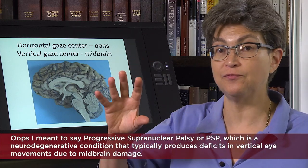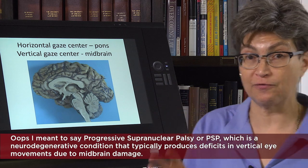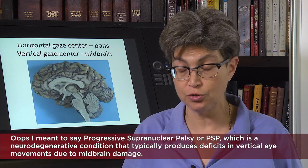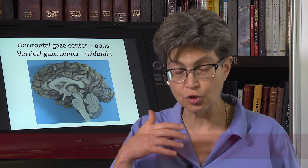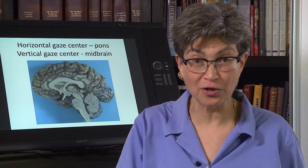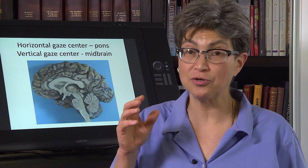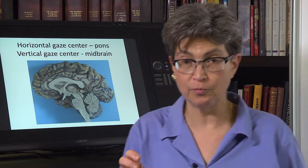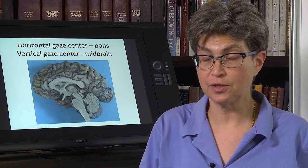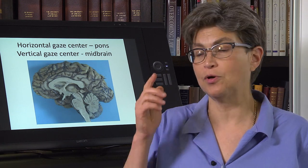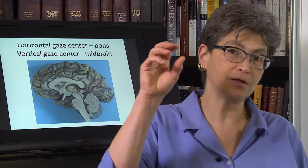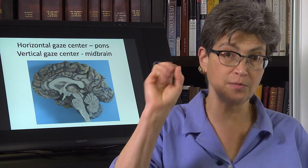There are lots of conditions that affect vertical eye movements and torsional eye movements — neurodegenerative diseases such as supranuclear palsy. There are a number of conditions that affect vertical eye movements and not horizontal eye movements, and an important group of conditions that affect horizontal gaze and not vertical gaze. I want you to remember now and forever that the horizontal gaze center is in the pons and the vertical gaze center is in the midbrain.